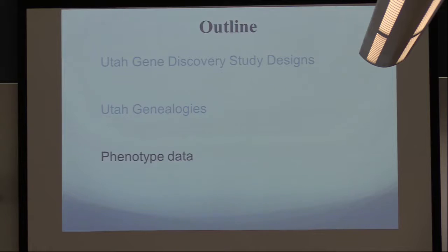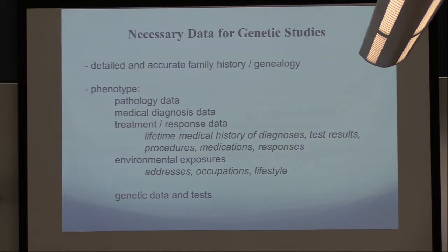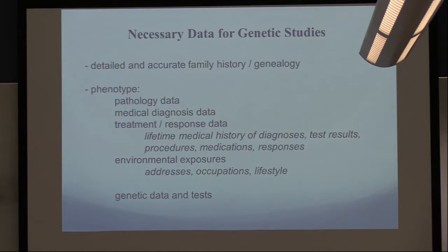What kind of data do you need for these genetic studies? Certainly you need family history and genealogy, but we also need to know phenotype. It is a little easier to establish presence of a phenotype than absence. People have asked me: could we study resistance to influenza virus based on people who didn't die in the 1918 pandemic? Or could I find a pedigree resistant to prostate cancer? It's a fantastic concept.